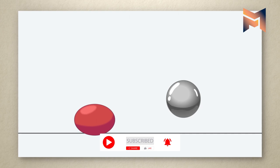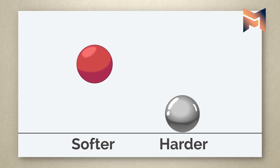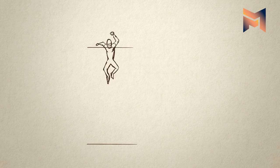When any object hits the object, it shows its properties. Like more squash and stretch means the object is softer, and less squash and stretch means the object is harder. It also applies to the character and facial expressions.